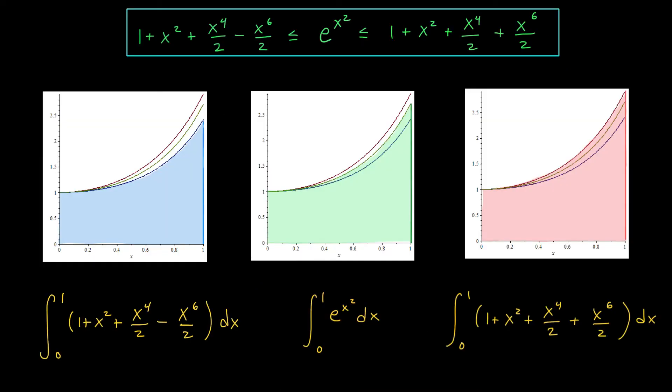Using what we know about Taylor polynomials, we were able to show that on the interval 0, 1, e to the x squared is always squished between these two polynomial curves. Graphically it might look something like this. e to the x squared is shown here in green, the lower polynomial curve is shown here in blue, and the upper polynomial curve is shown here in red. Over the interval 0, 1, the green curve is always stuck between the blue curve and the red curve.